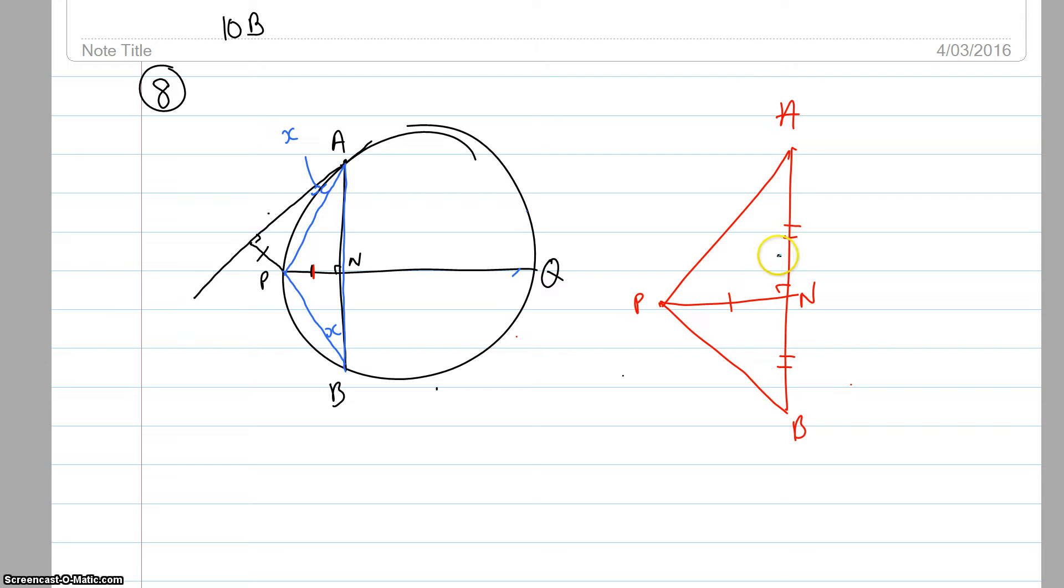Now if we've got two sides that are the same and a common angle, which we do, then that means that the third side must also be the same. And it also means that all of the angles must be the same as well. And so if that angle there is x, then this angle here must be angle x as well.